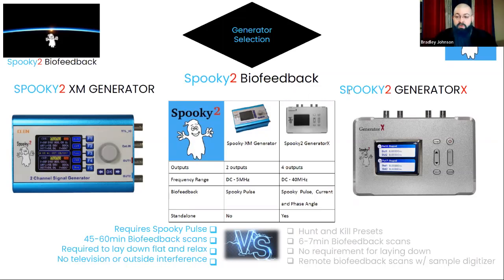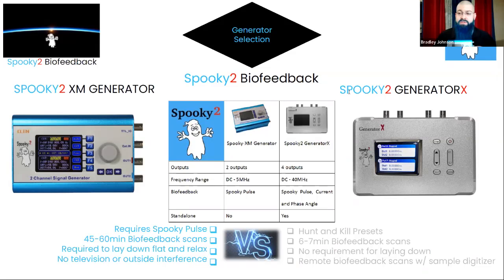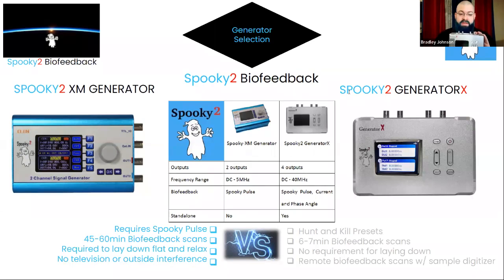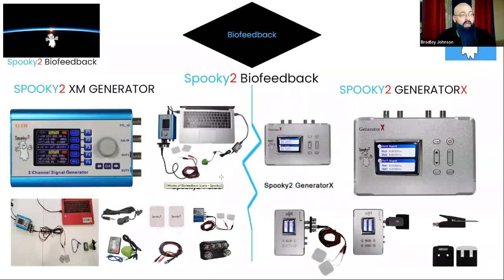The XM requires the Spooky Pulse to be connected before loading the software — green light confirmed, red light flashing to show heartbeat detection. The biggest difference is scan time: the XM pulse scan takes about an hour, while the Gen X biofeedback scan can be done in about six minutes. No more laying down, no more waiting — much faster results. We'll cover how those scans work this evening.